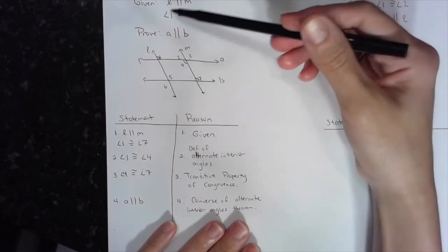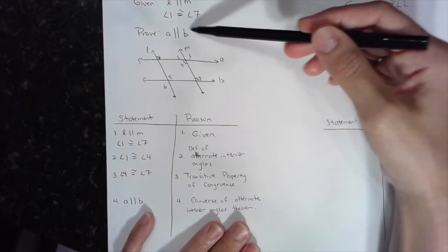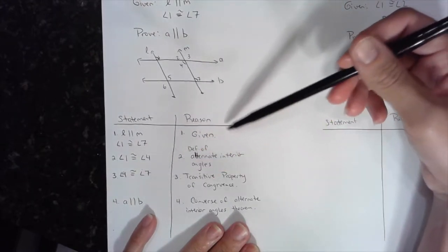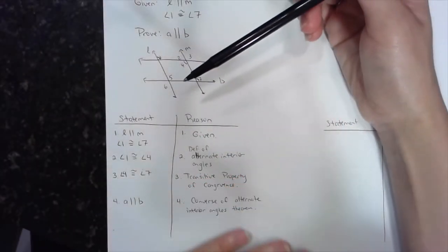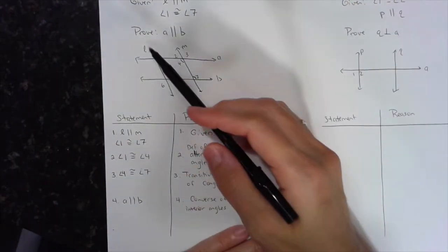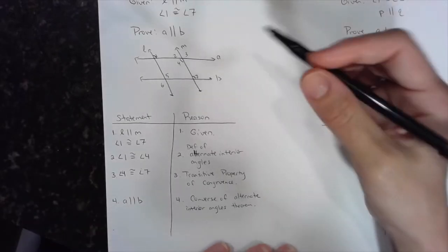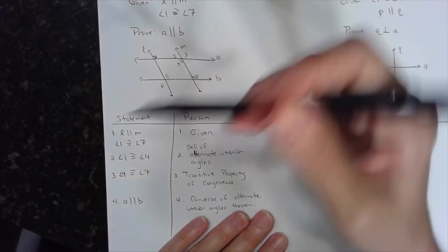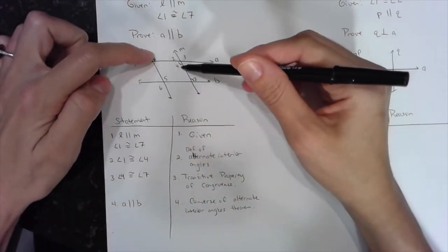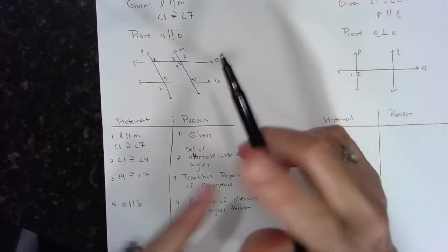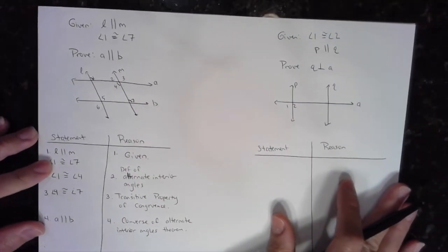The key rules: the first statement is always what's given, the last statement is always what you're trying to prove, and you work your way between them. Notice that when I used parallel lines to prove two angles are congruent as alternate interior angles, that's the definition of alternate interior angles. But when I used congruent angles to prove that lines are parallel, that's the converse of the alternate interior angles theorem.